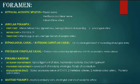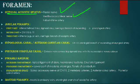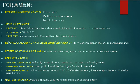Starting the revision: internal acoustic meatus contains CN VII (facial nerve), CN VIII (vestibulocochlear nerve), and the labyrinthine artery. The jugular foramen is divided into three parts: anterior, middle, and posterior.